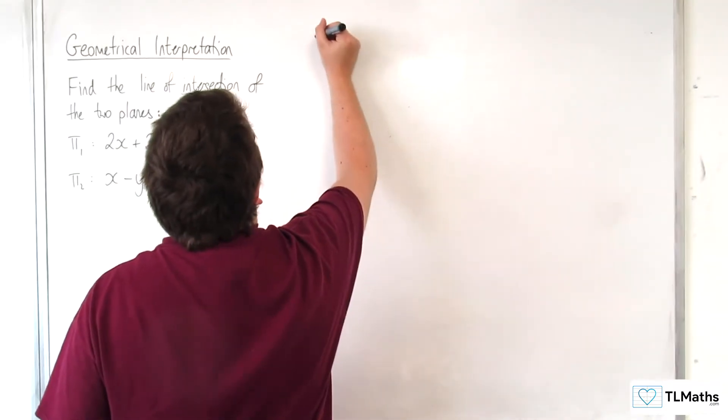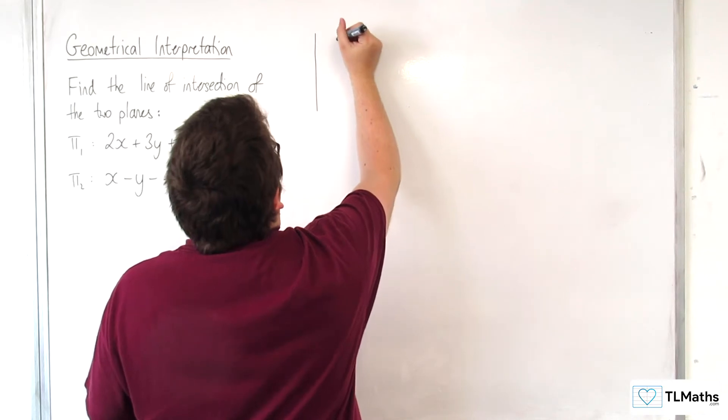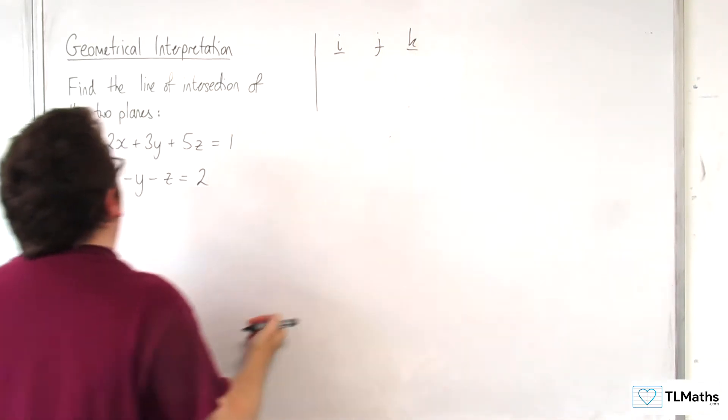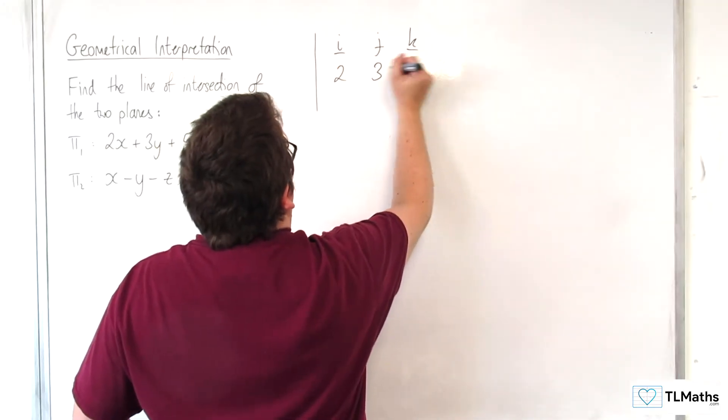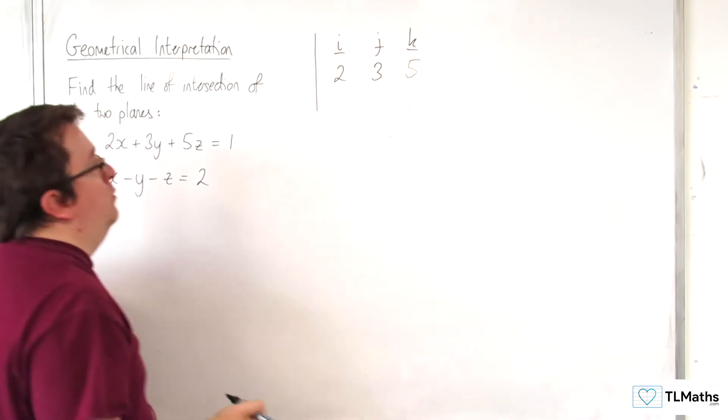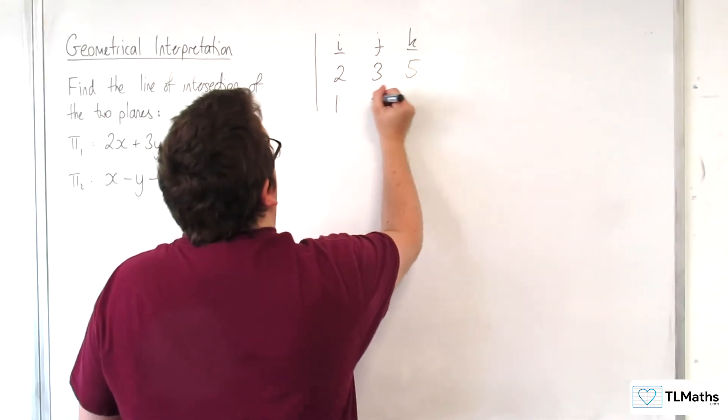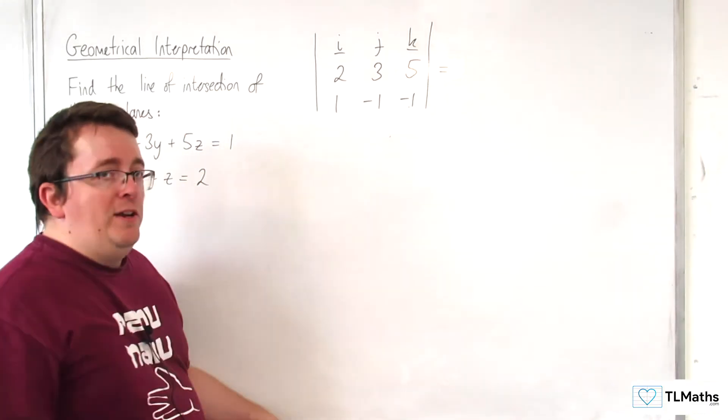So the way that the vector product works is you find the determinant of the matrix where you have I, J, K in the top row. We're going to have 2, 3, 5, that's the normal vector for the first plane, and 1, -1, -1, the normal vector for the second plane. And we find the determinant of this matrix.